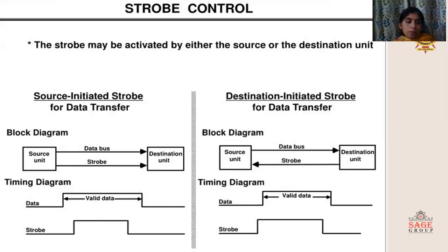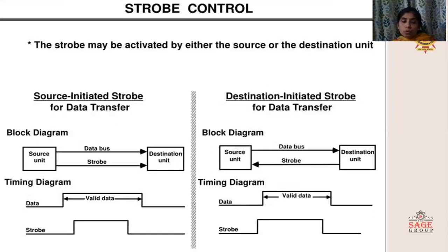This is the timing diagram for source-initiated strobe. Through the data bus, the actual data will be transmitted. After some time, the strobe pulse will be initiated by the source to inform the destination that actual data transfer has started. However, the destination will not give any response to the source unit, so the source unit will be unaware of whether the data was transmitted properly or not.